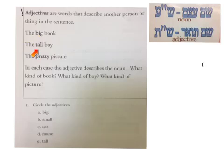Tall boy, that would be a Sheyem To'ar, the word tall. Pretty picture. Again, pretty would be the Sheyem To'ar, the adjective, and picture would be the Sheyem Etsem.